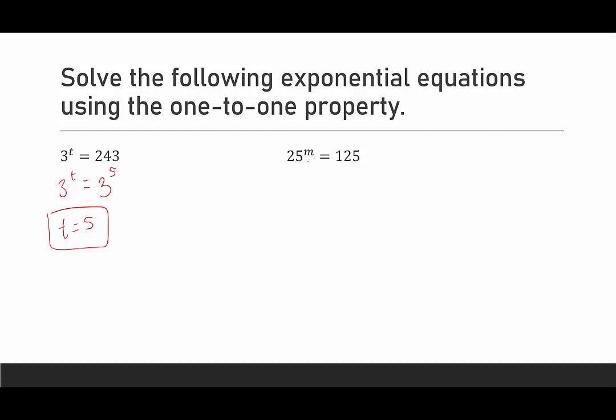Here we have 25 to the m equals 125. Are 25 and 125 powers of the same base? And the answer is yes, they are both powers of five. 25 is five squared, so I'm going to rewrite 25 as five squared to the m. And 125 is five cubed. Here we see power to a power. For power to a power, we multiply those powers. That's five to the two m equals five to the third. Now that we have the same base, they're both base five, that must mean, if this is a true equation, that the exponents must equal each other. Two m must equal three. And then we want to get m by itself, so we'll divide both sides by two, and we end up with m equals three over two.